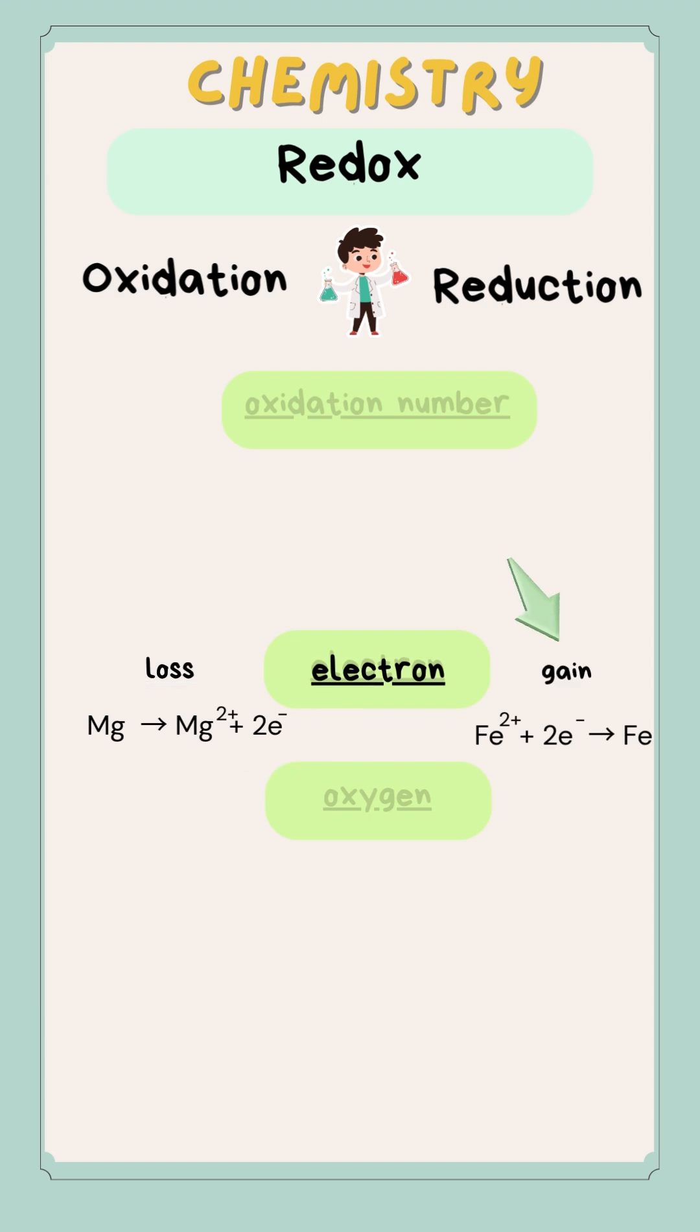And then, if they gain electron, then it's reduction. For example, Fe, the ion 2, they accept electron, then they will become ion atom.